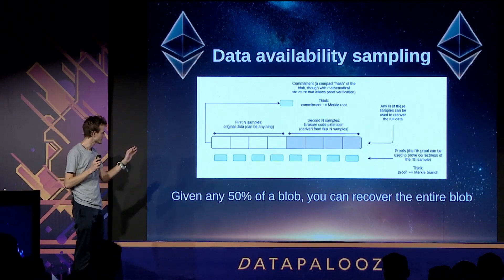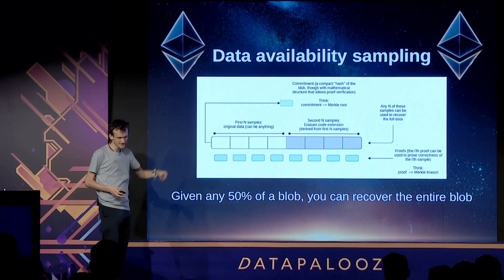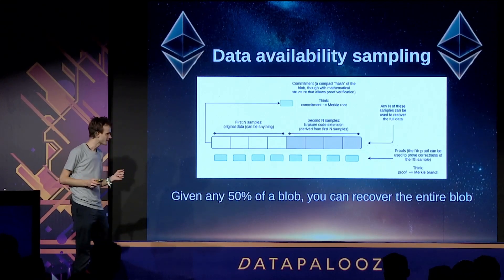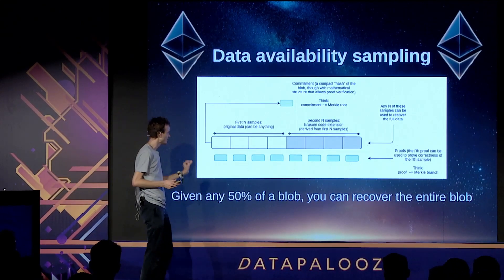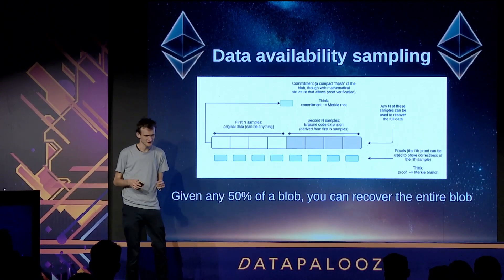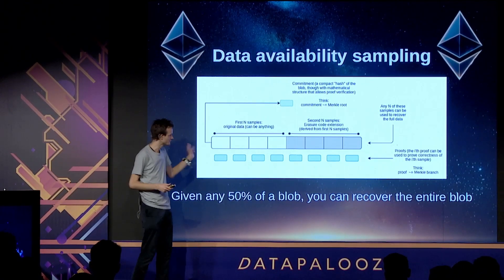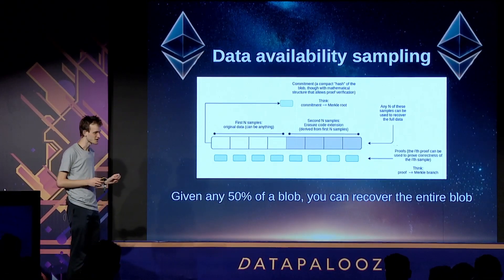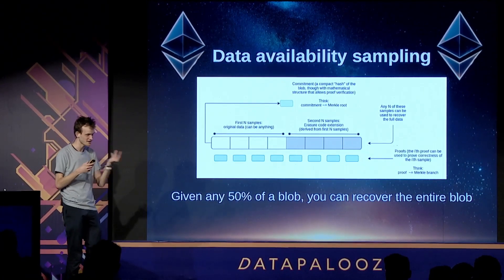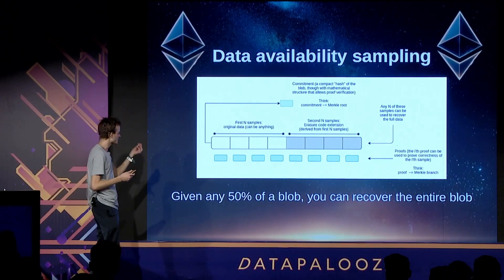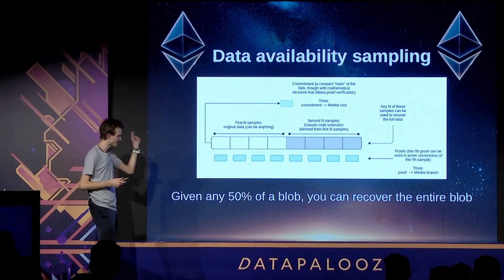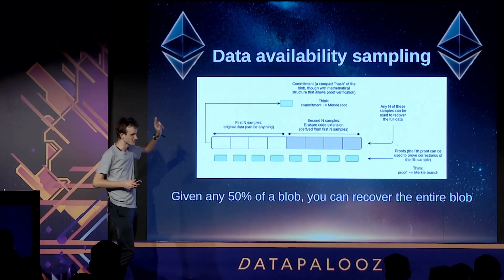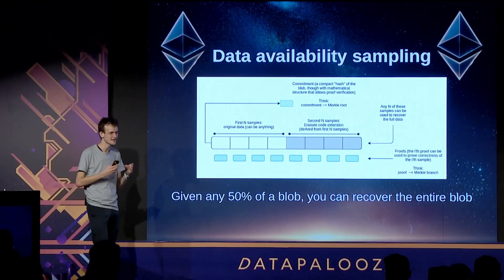There is extra mathematical stuff involving KZG commitments that let you prove that any one of the pieces is correct, even across the entire erasure code. It's actually like a very simple, highly specialized ZK-SNARK that proves any particular piece of data in the extension is actually in the hash and is the correct extension.